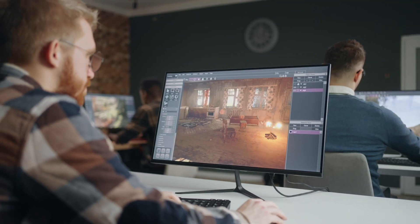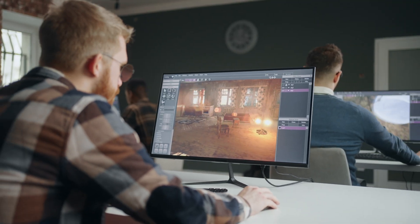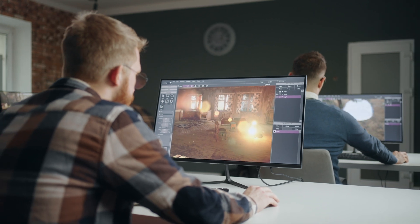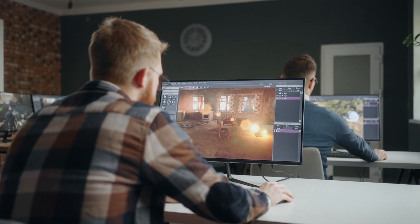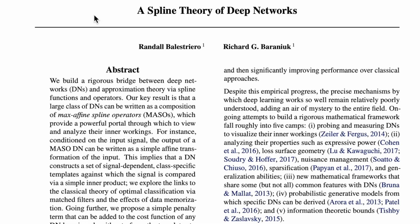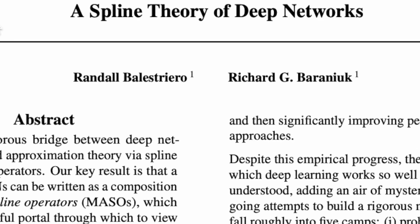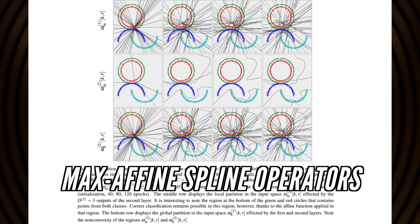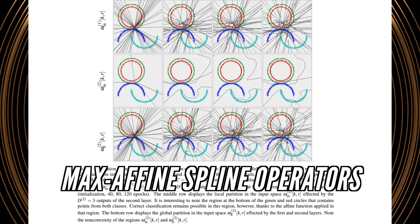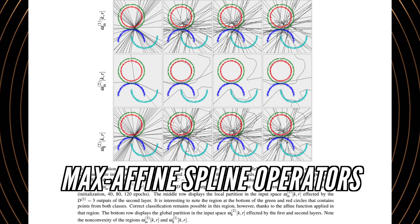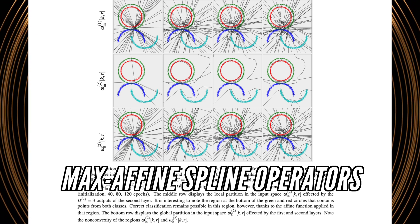This is something a lot of video game engineers are already super familiar with, because in computer graphics and video games, a lot of smooth lines that you interact with are actually created in this way. Now let's talk about this paper. It is called 'A Spline Theory of Deep Networks.' The main finding is that there is a new way to figure out how these deep networks come to the conclusions that they do, by understanding the complicated shape of the network using something called max affine spline operators.